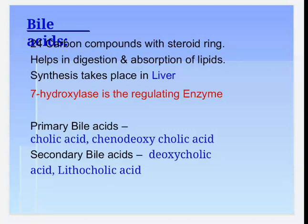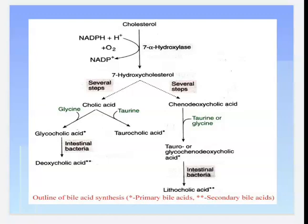Bile acids are 27-carbon compounds with a steroid ring that help in the digestion and absorption of lipids. Their synthesis takes place in the liver, whereas cholesterol biosynthesis takes place in the cytosol. The conversion of bile acids from cholesterol takes place in the liver; 7-alpha hydroxylase is the regulating enzyme. The primary bile acids are cholic acid and chenodeoxycholic acid, and the secondary bile acids are deoxycholic acid and lithocholic acid.